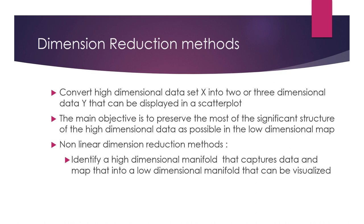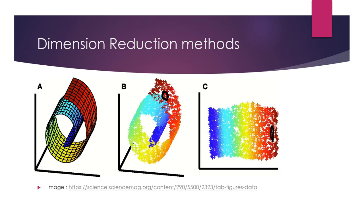If you consider non-linear methods, what they will do is identify a high dimensional manifold first, and then map this high dimensional manifold into a low dimensional manifold, so that we can visualize the data. We can explain this using an example. Here we can treat graph A as our high dimensional space, which is a 3D space. You can see that the most significant structure of this data is in a high dimensional manifold. What this dimension reduction method is going to do is map this high dimensional manifold into a low dimensional manifold like in graph C, so that we can visualize the data on a scatter plot.